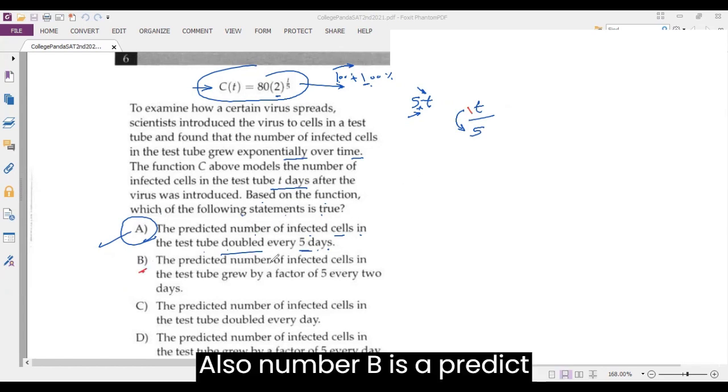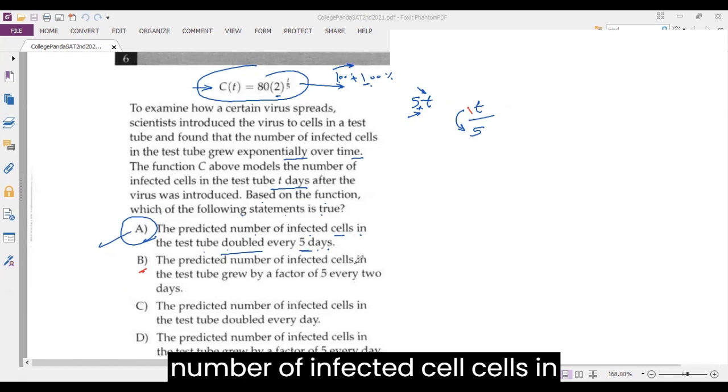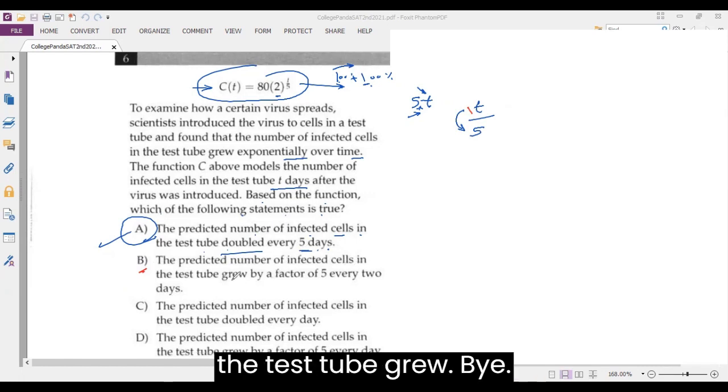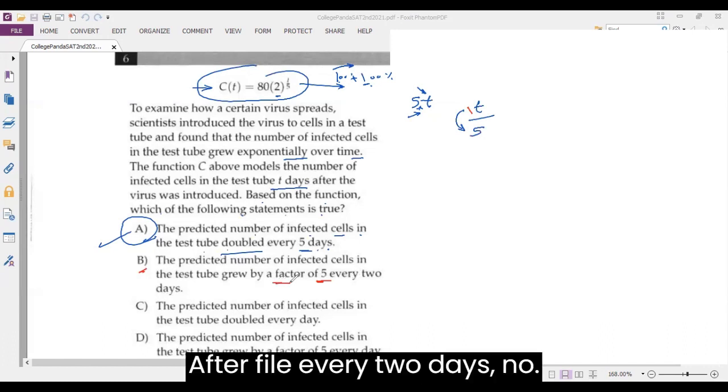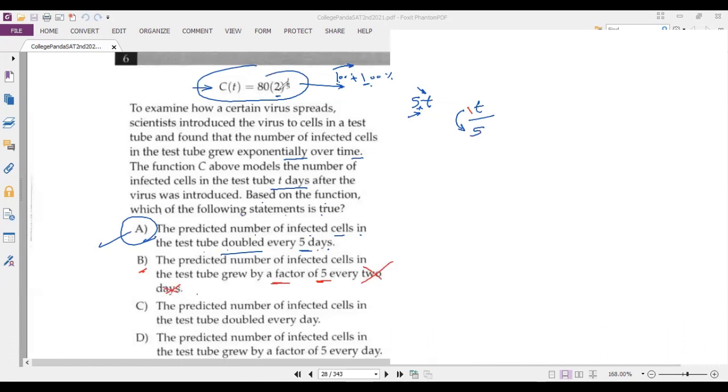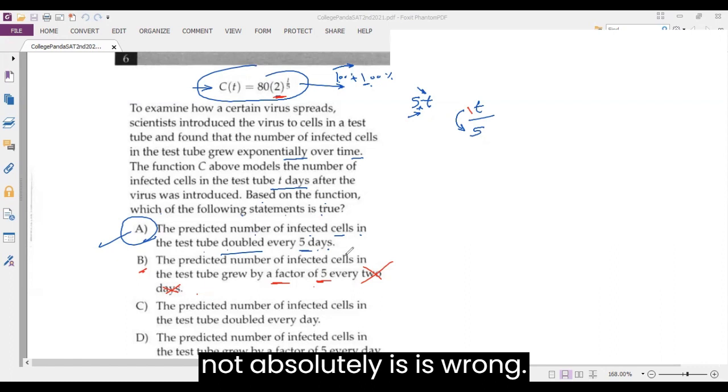I hope it's clear. Also, number B predicts the number of infected cells in the test tube grows by a factor of five every two days. No, cannot. Two is the base, so it doubles, not by a factor of five. This is absolutely wrong.